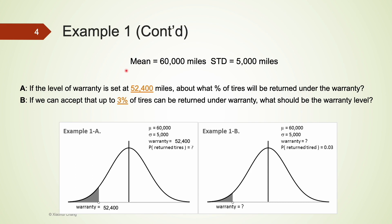Now let's look at a modified version with the warranty level set at 52,400 miles. To use the empirical rule, we need to convert this to a z-score, but this warranty level does not give a whole-number z-score. Without a whole-number z-score, we cannot directly use the empirical rule, which only works for z-scores of zero, plus or minus one, plus or minus two, and plus or minus three.